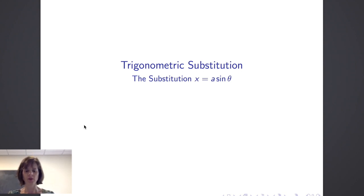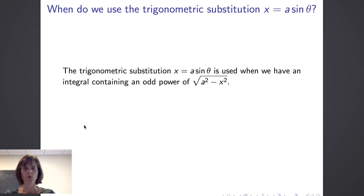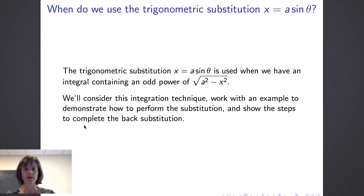Hello. In this video, we will discuss the first of three trigonometric substitutions we can make when evaluating integrals. We'll consider when we use the substitution x equals a times the sine of theta. We use this substitution when we have an integral containing an odd power of the square root of a squared minus x squared. We'll work with an example to demonstrate how to perform the substitution and show the steps needed to complete the back substitution once we've integrated.